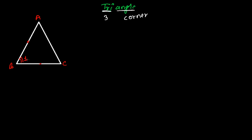Let me name this the first corner. Line segment AB and line segment AC make another corner — corner 2. And line segment BC and line segment AC make another corner — the third corner. So we have three corners total. And since we have three corners, we should also have three sides.